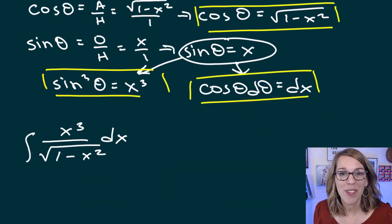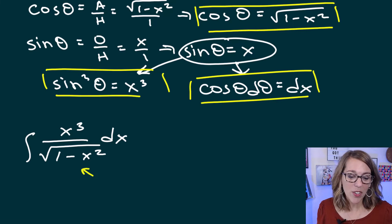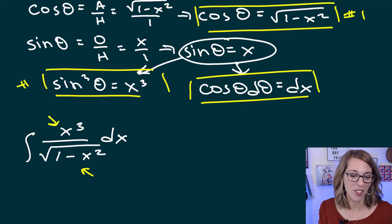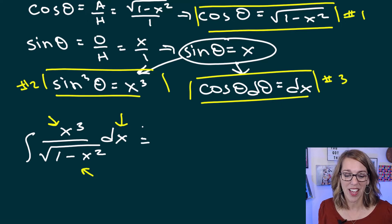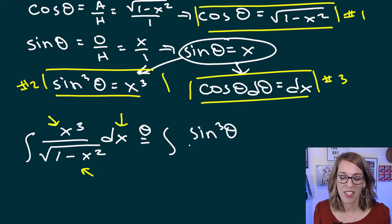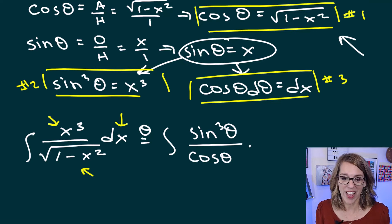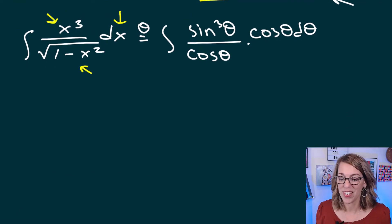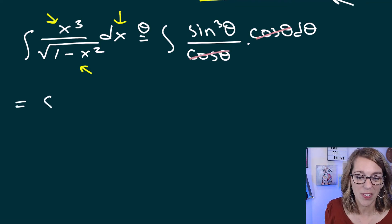Bringing the new integral down for substitution: I replace √(1 − x²) with cos(θ), replace x³ with sin³(θ), and replace dx with cos(θ) dθ. So the integral becomes sin³(θ) / cos(θ) times cos(θ) dθ. Notice that the cos(θ) terms cancel, leaving me with the integral of sin³(θ) dθ.